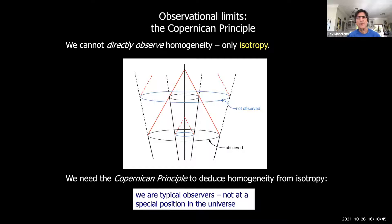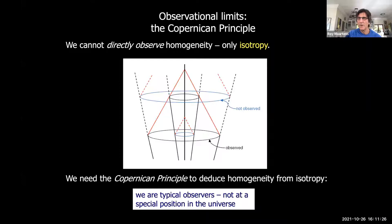The limits to the cosmological principle arise from the fact that we cannot directly observe homogeneity. Our past light cone gives us access only to two-spheres at constant time or constant redshift — we only observe one of those two-spheres. We do not have access to measurements on constant-time surfaces where homogeneity is defined. We need a Copernican principle if we want to deduce homogeneity from isotropy — this principle roughly says that we are typical observers, not at a special position, so statistically what we see is what others see.